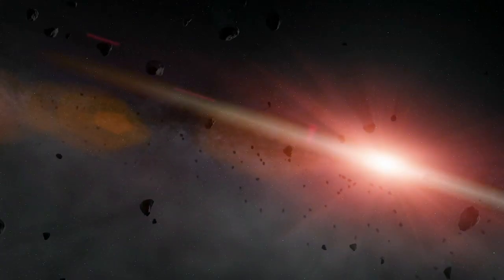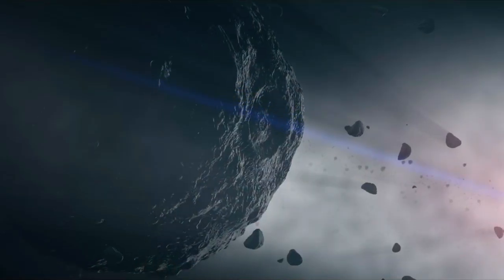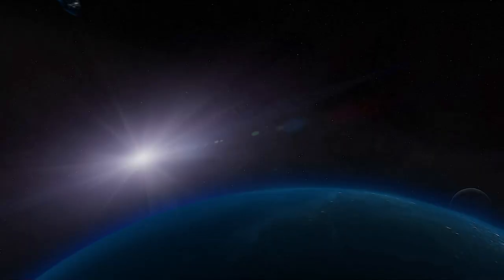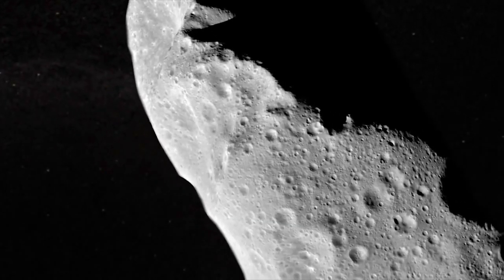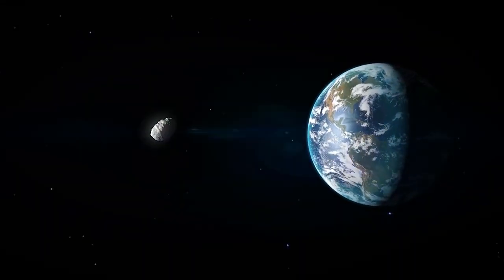Our solar system is actually littered with asteroids and comets, and sometimes they do come very close to Earth. When an asteroid or comet could one day come close to our planet, it's known as a near-Earth object.